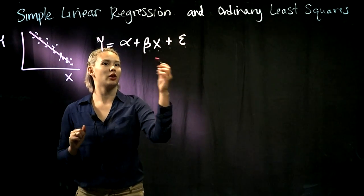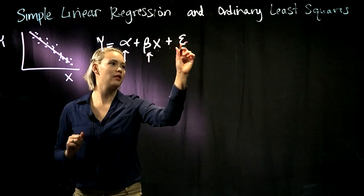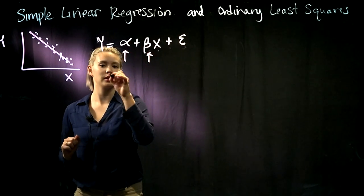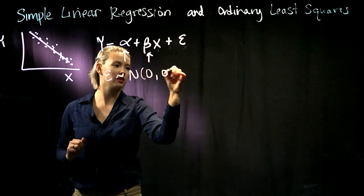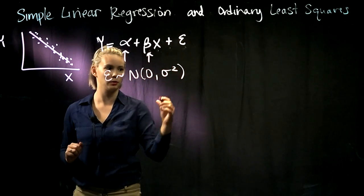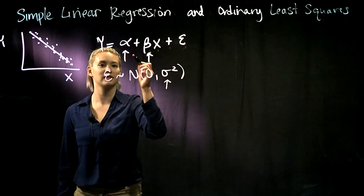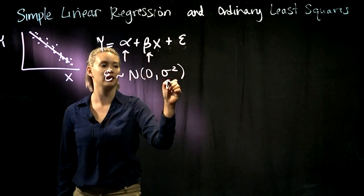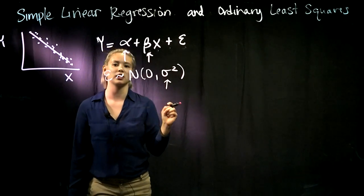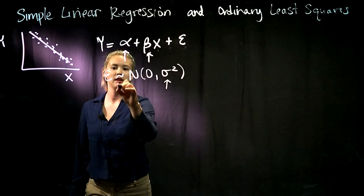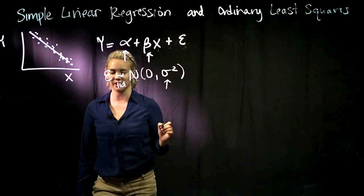Our parameters are alpha, beta, and the variance of those epsilons. The epsilons are normally distributed with mean zero, variance sigma squared. So we have three parameters in this setting: alpha, beta, and sigma squared. Usually in the simple linear regression setting we also assume that these error terms are independent and identically distributed.